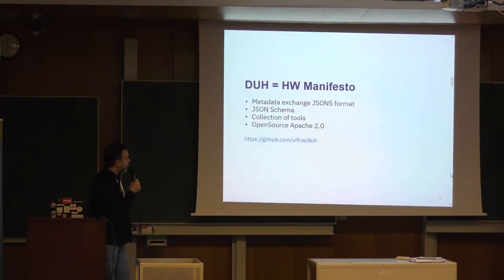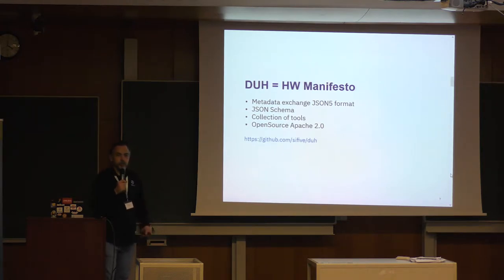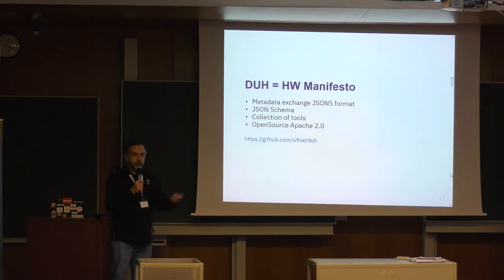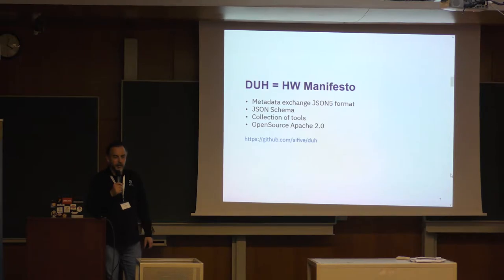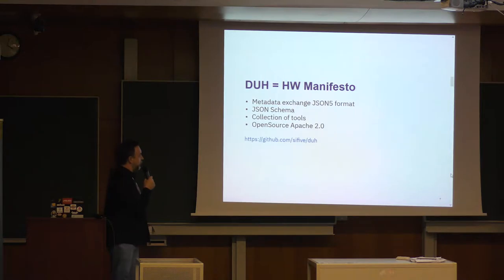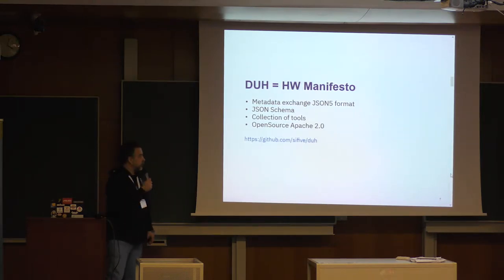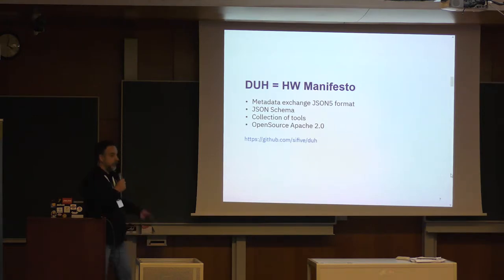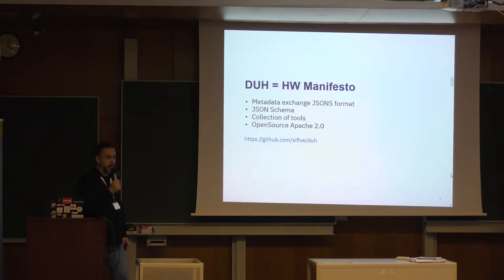So what we came up with is to look at and create a new format — a format that will describe metadata about an IP. It's okay to dig into it or read documentation and try to understand what the IP is about, but it's better to make this information available for a computer to read. So it's a metadata exchange format. These days it's common to have a JSON file — it used to be XML, but these days it's mostly JSON.